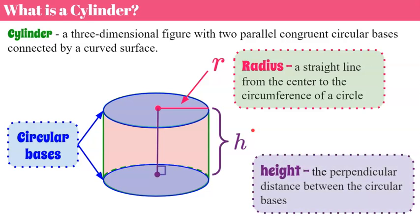We also need to understand the height, which is the perpendicular distance between the two circular bases — from center to center, or from the circumference down to the parallel base of the second circle. This is the height, and it's always perpendicular. So when we have a cylinder, our circular shapes are parallel to each other and are our bases. We have a radius from the center to the circumference, and a height which is perpendicular, connecting the two circular bases.